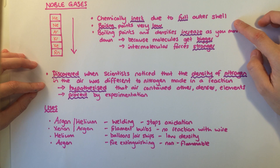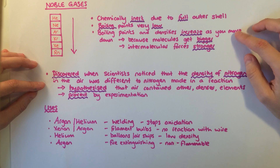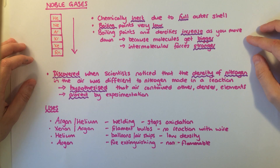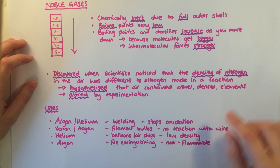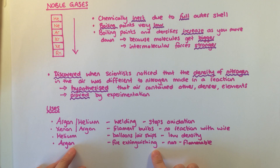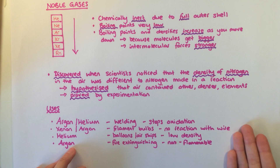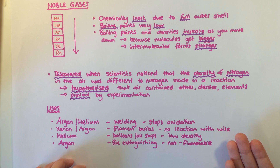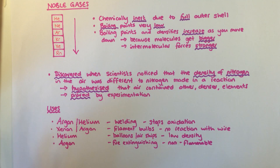Properties of the noble gases include low density and low boiling points, both of which increase as you move down the group due to the larger sized molecules and stronger intermolecular forces. Due to their unique properties, noble gases have lots of different uses, including in airships and balloons because of the low density, in light bulbs and in welding to prevent oxidation, and in fire extinguishing systems because they are non-flammable.